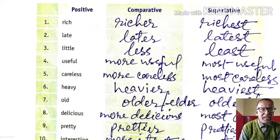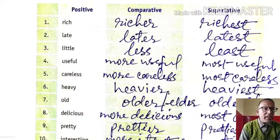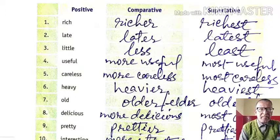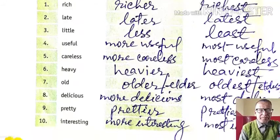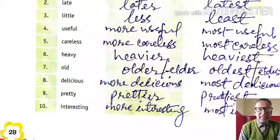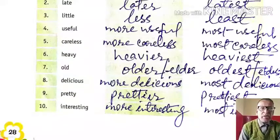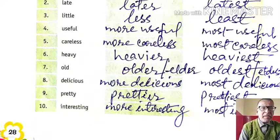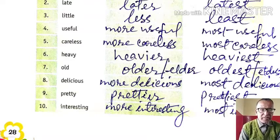Heavy, heavier, heaviest. Old, older, oldest — or old, elder, eldest, depending upon its meaning. Delicious, more delicious, most delicious. Pretty, prettier, prettiest. Interesting, more interesting, most interesting.